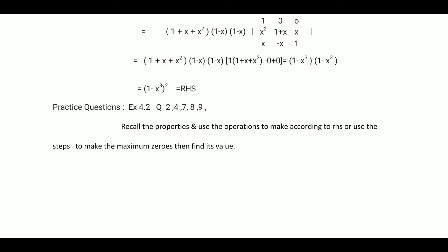Now practice all questions from exercise 4.2: question 2, question 4, question 7, question 8, question 9. Recall the properties, use row and column operations to make maximum zeros according to the right hand side, then find the value of the determinant. This is the method.